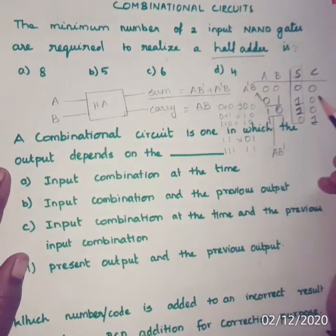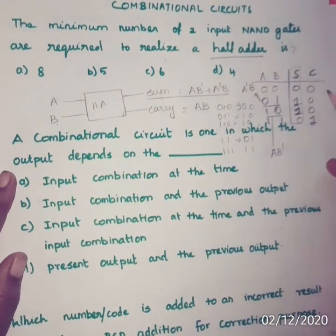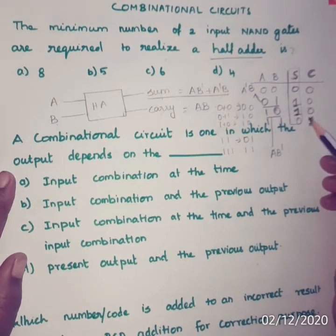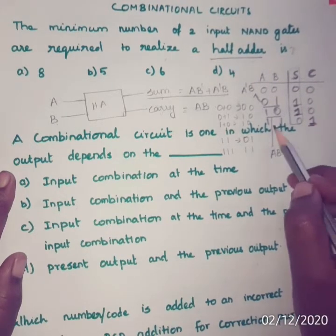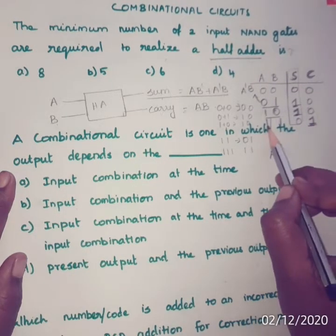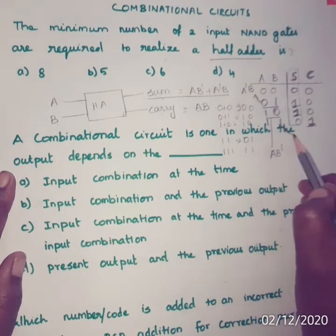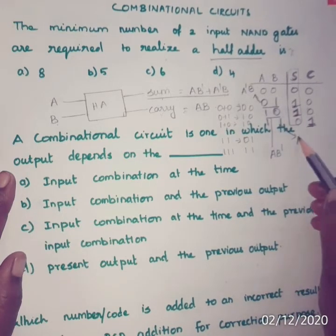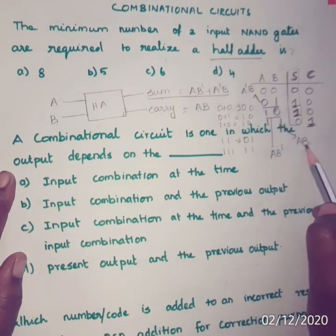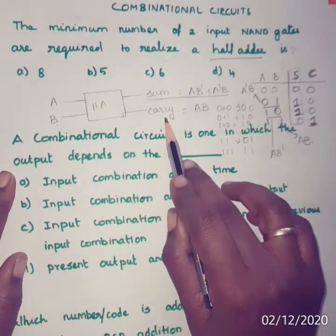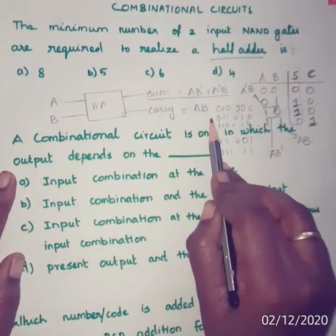Next, carry. For carry, look at that column. Carry is equal to 1 when the corresponding input is A=1, B=1. So the minterm is AB. Therefore, carry is equal to AB.